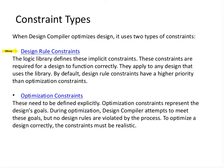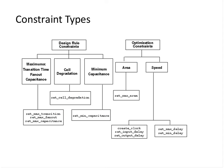During optimization, DC will try to meet these goals, but it will ensure design rule constraints are met first — priority is given to design functionality. DC will never try to meet timing by violating design rule constraints. First and foremost, design rule constraints must be met; then comes performance. The main design rule constraints are maximum transition time, maximum fanout, and maximum capacitance.